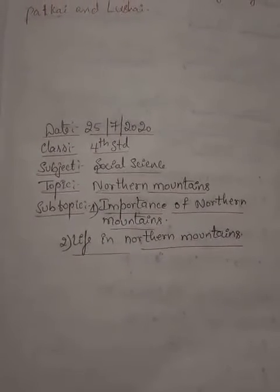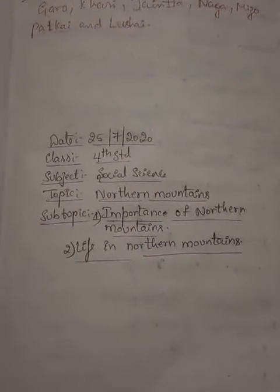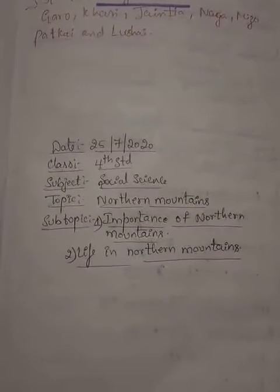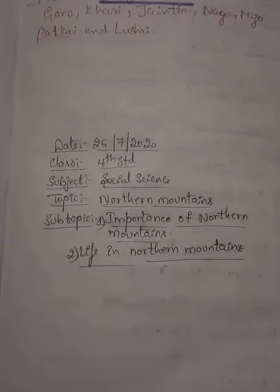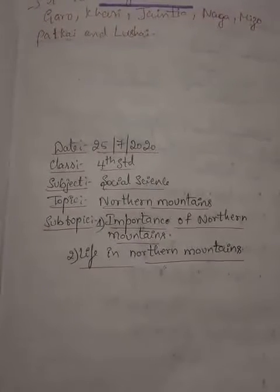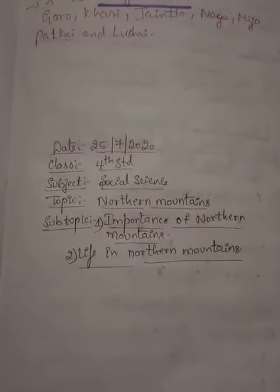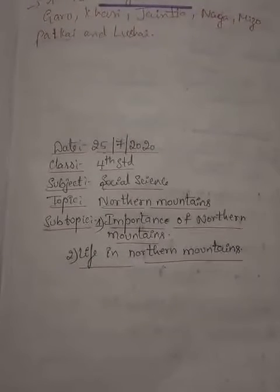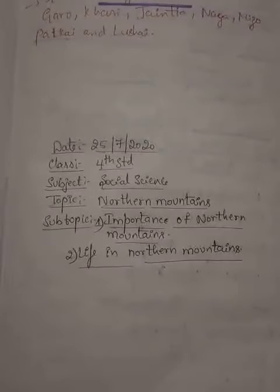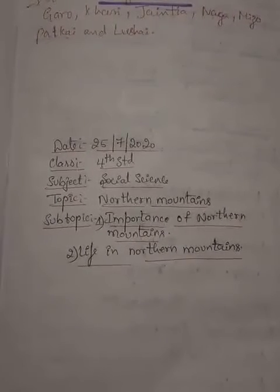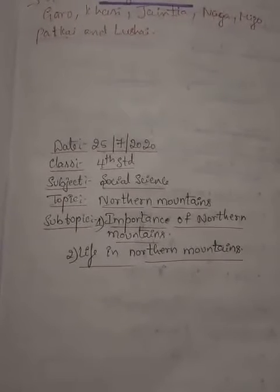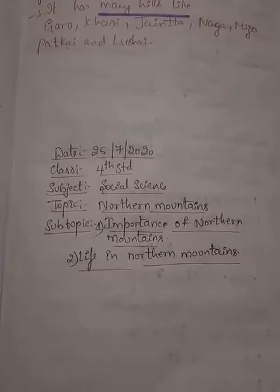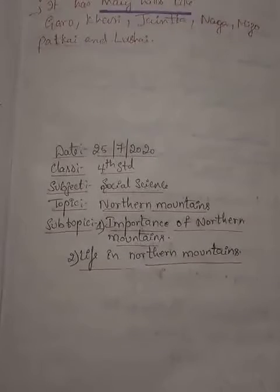Good morning students. In the previous class we began with the new chapter, Northern Mountains. Northern Mountains is one of the landforms found in the Indian physical features. In this chapter we read about the landform shown by the brown color in the map of India. Coming to the northern mountains, we have three ranges: the Karakoram range, the Himalayan range, and the Purwanchal range.